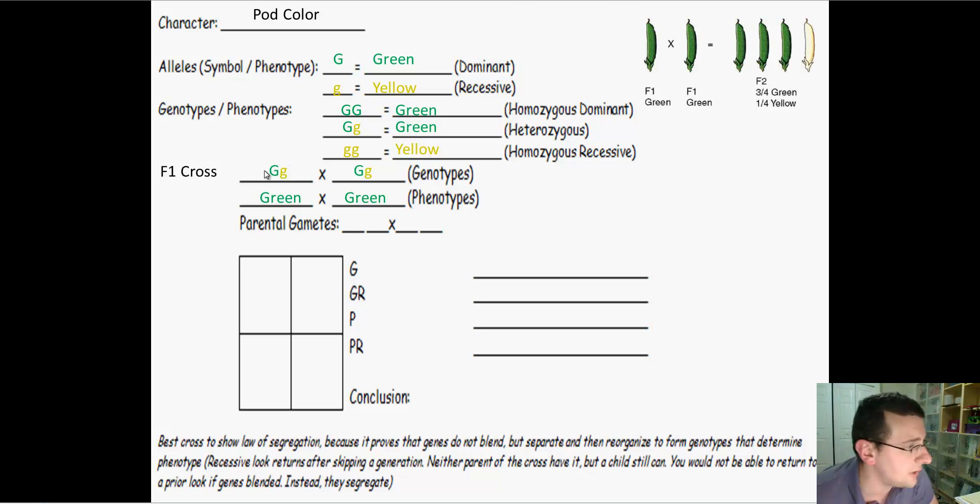I do meiosis with this and that means that first parent is going to have to donate a G over here, and that parent is going to have to donate a little g over here. So one parent, big G, little g. It's going to be the same thing for the other parent. When I put that on the Punnett square, I'm going to put one big G, one little g and so forth.